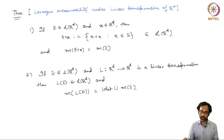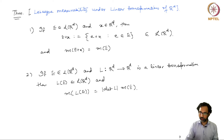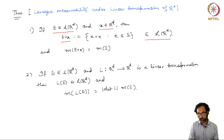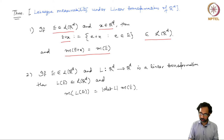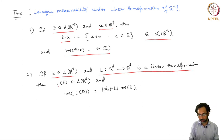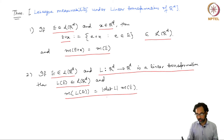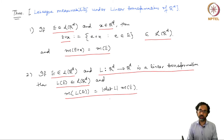The theorem we want to prove concerns Lebesgue measurability under linear transformations of R^d — a result we have already seen for the Jordan measure, now extended to the Lebesgue measure. The first part says that if E is Lebesgue measurable and x is a vector in R^d, then the translated set E + x is also Lebesgue measurable and the Lebesgue measure of the translated set equals the Lebesgue measure of the original set. The second part says that if E is Lebesgue measurable and L is a linear transformation of R^d, then L(E) is Lebesgue measurable and the measure transforms as m(L(E)) = |det(L)| · m(E).